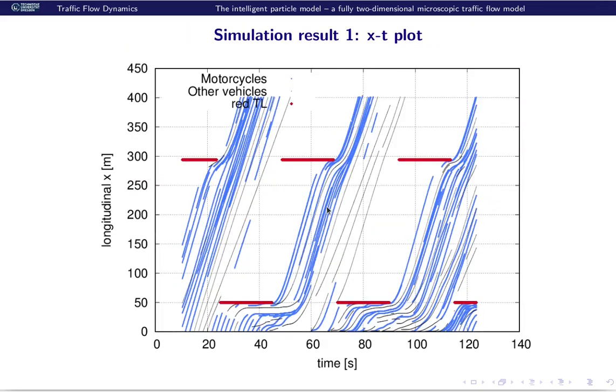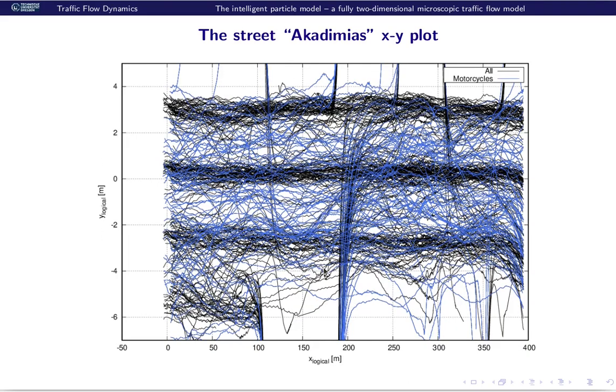And of course, it's still not quantitatively similar, but it's also different simulation geometries. But you see that the motorcycles, which are the blues, and the normal cars, overlap something. This does not mean that there are collisions, for example here, but just that the motorcycles drive not at the center of the lanes, but in between. So here the black are the regular traffic, and the blues are the motorcycles. And you see that the motorcycles basically drive in between the lanes.